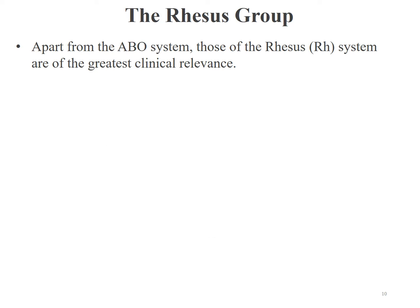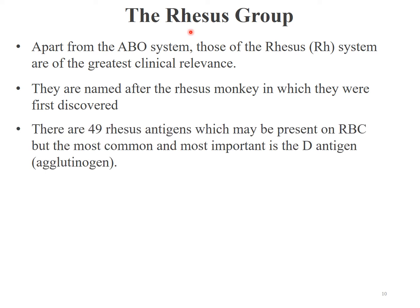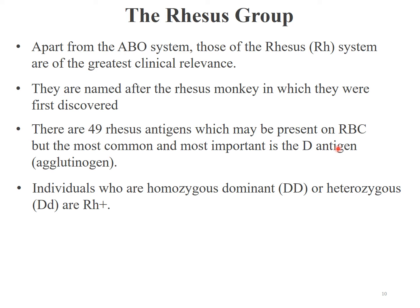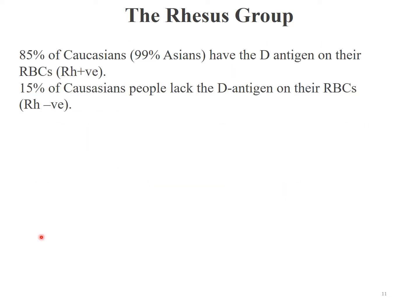Another clinically important blood group is the rhesus group or rhesus factor, named after the monkeys in which it was first discovered. There are 49 rhesus antigens found on the surface of red blood cells, but the most important one is the D antigen or D agglutinogen. A person can be either rhesus D positive or D negative. Homozygous dominant or heterozygous dominant individuals are D positive, while homozygous recessive individuals are D negative. Almost all Asians — 99% — have the D antigen, whereas for Caucasians that figure is 85%, meaning 15% of Caucasians lack the D antigen.